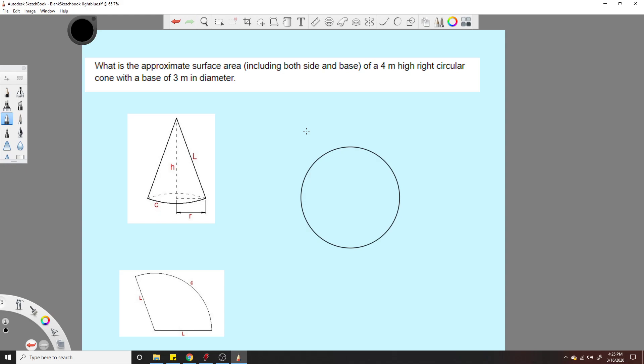For the base section of the cone, that's pretty simple. We'll do pi r squared. So we need to find our r real quick which is half of this three meter diameter. So r equals 1.5 meters.